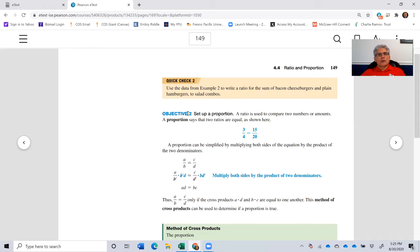Now we use the term proportion. A proportion is a ratio used to compare two numbers or amounts. A proportion says that two ratios are equal as shown below. So 3 over 4, 3 to 4 is equal to 15 to 20, or 3 quarters is equal to 15 twentieths.